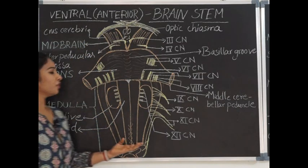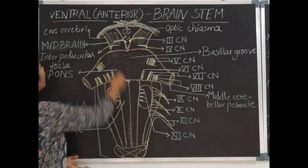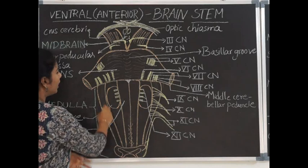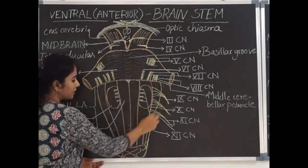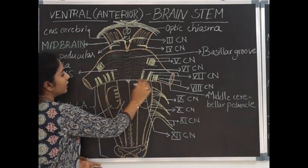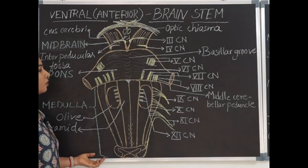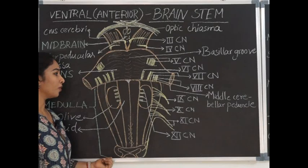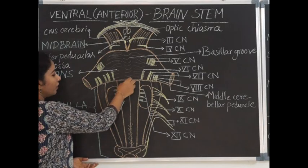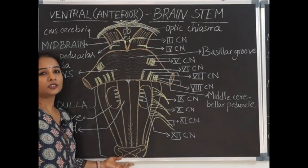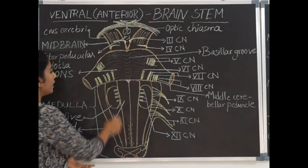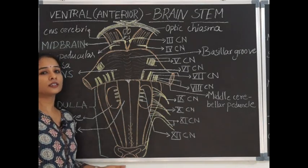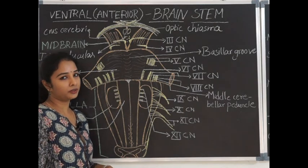Coming to the features of medulla oblongata, what we are seeing is the ventral aspect of brainstem. Medulla oblongata is a bulb-like structure which is a truncated cone-like structure. Bulbar paralysis and bulbar nuclei are terms associated with medulla oblongata. The length of the medulla oblongata is approximately three centimetres, width at its widest part is two centimetres, and thickness is around 1.25 centimetres.